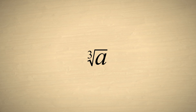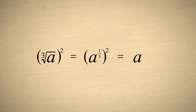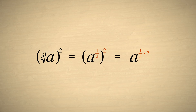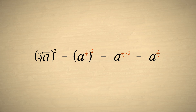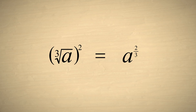To illustrate how this works, let's start with the cube root of a, which can be written as a to the one-third power, and then square it. As we saw in the chapter on raising exponential expressions to powers, we can simplify the expression on the right by multiplying the exponents one-third and two, which gives us a to the two-thirds. So a to the two-thirds represents the cube root of a, squared.